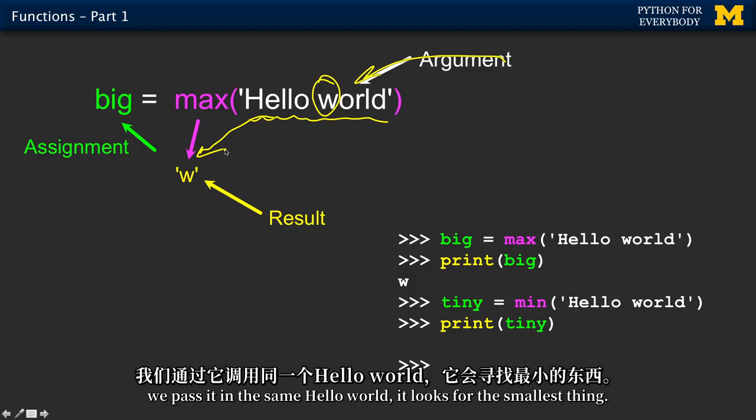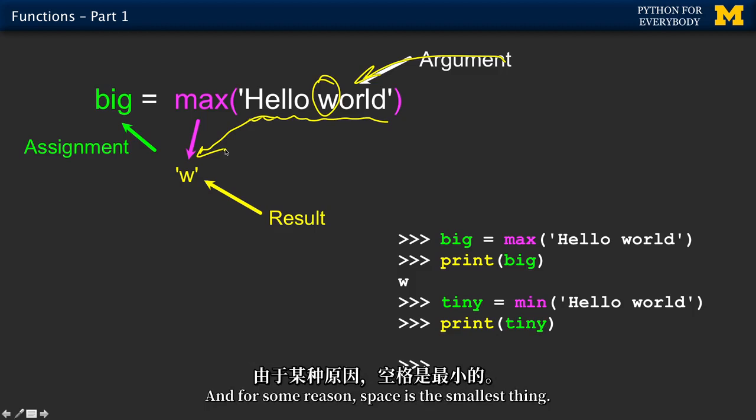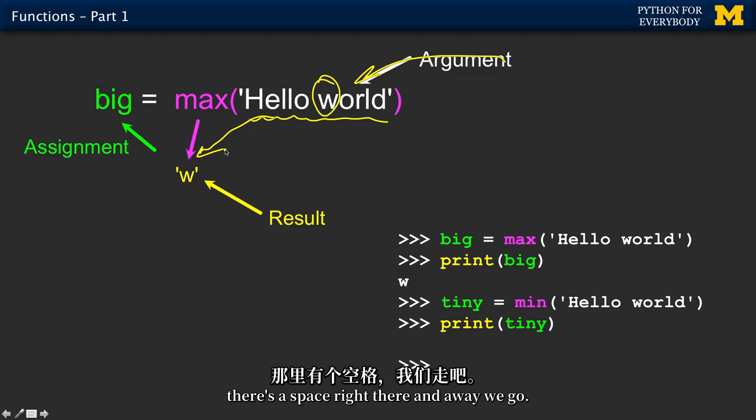So if we do a min, which is a different function, we pass it in the same hello world, looks for the smallest thing. And for some reason, space is the smallest thing. So this space is what gets sent back to tiny. And there's a space right there. And away we go.